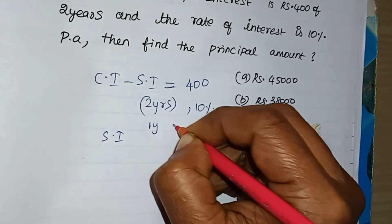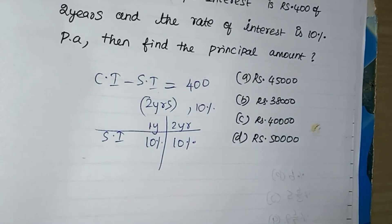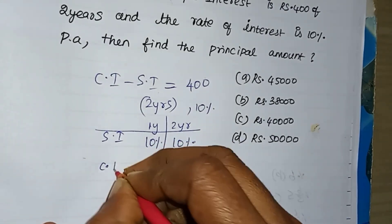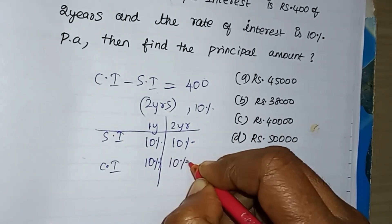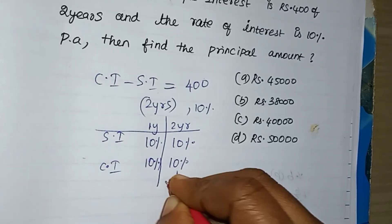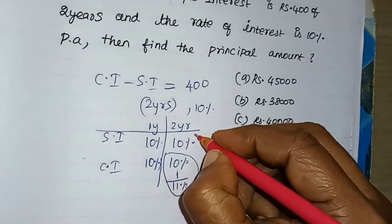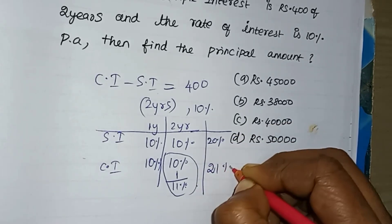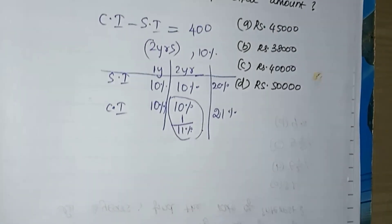The first year amount is 10% and the second year amount is also 10% of the compound interest. The next amount is 10% of the compound interest. In total, we have 21% across these two years. There is a good shortcut for compound interest for two years.